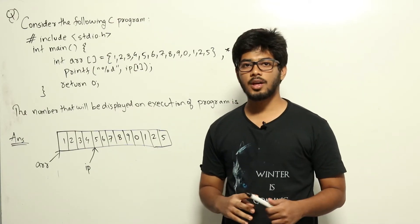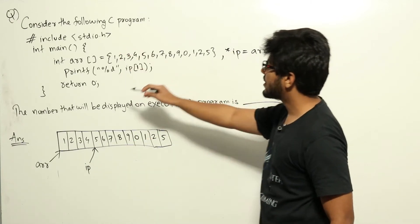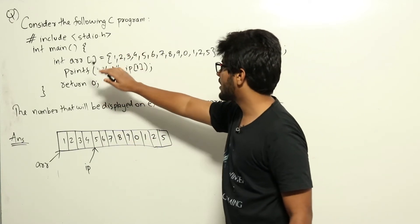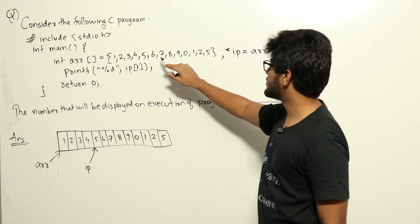This is a simple question coming from the C programming section. We have been given this particular program. In the program, they are declaring this array ARR that contains thirteen elements: 1, 2, 3, 4, 5, 6, 7, 8, 9, 0, 1, 2, 5.